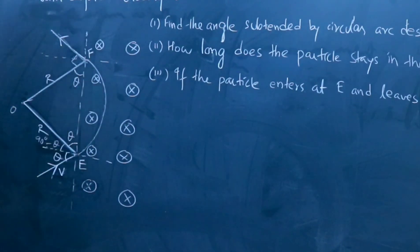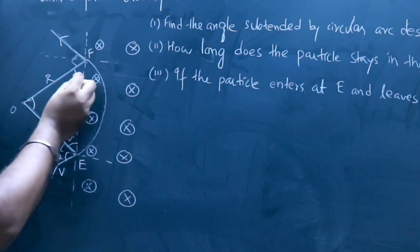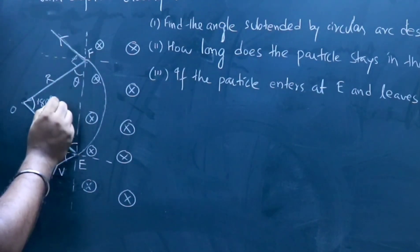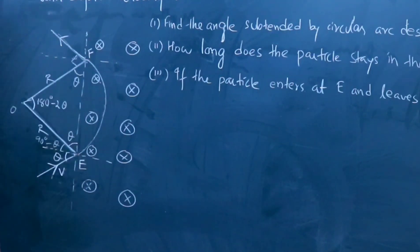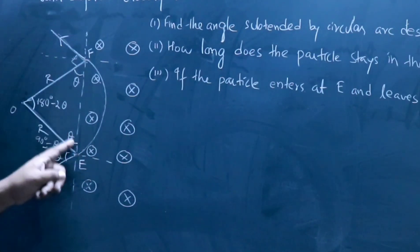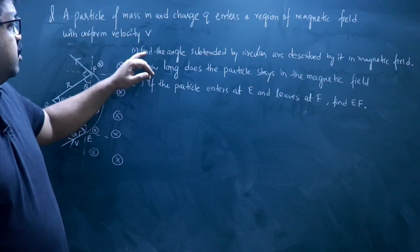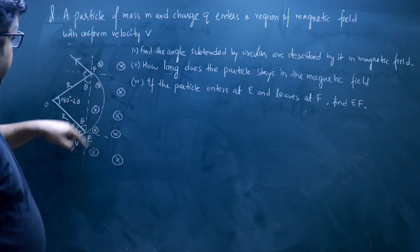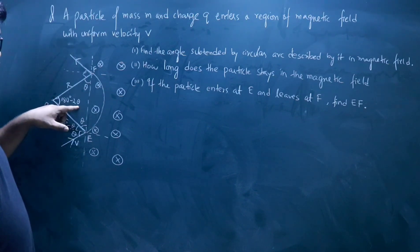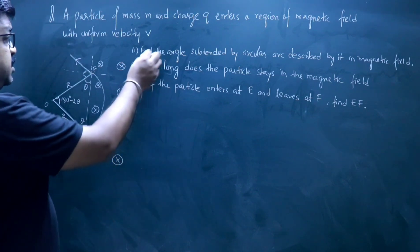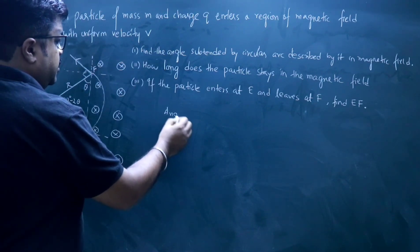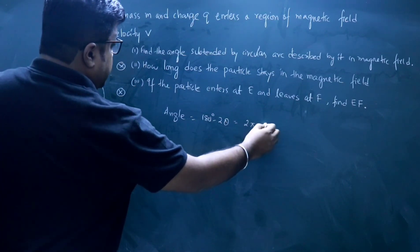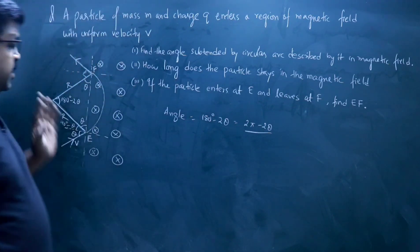Now if this angle is theta and this is also theta, what is the third angle? The sum of these three angles is 180 degrees, so this angle must be 180 degrees minus 2 theta. So for this question — find the angle subtended by the circular arc described in the magnetic field — this circular arc subtends an angle of 180 degrees minus 2 theta at the center, or equivalently pi minus 2 theta. This angle is found.